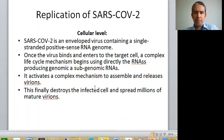Replication of SARS-CoV-2 is actually the issue why we can think about exponential curve from the very beginning. The microbiological point of view starts with a cellular level, where SARS-CoV-2 is an enveloped virus containing a single-stranded positive-sense RNA genome. All vaccination groups are now trying to address the subsegments of this RNA genome which makes the base of the virus. Once the virus binds and enters the target cell, a complex life cycle mechanism begins using directly the RNA, producing genomic and subgenomic RNAs, and activates a complex mechanism to assemble and release the so-called virions. Finally, the infected cells will be destroyed and millions of mature virions are spread in the host.